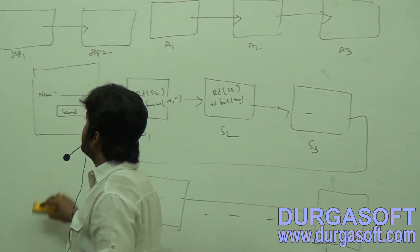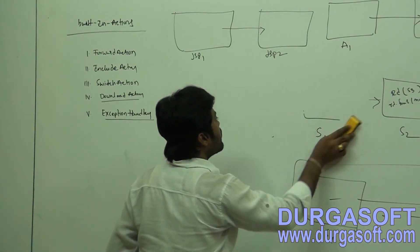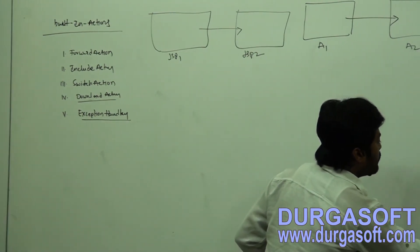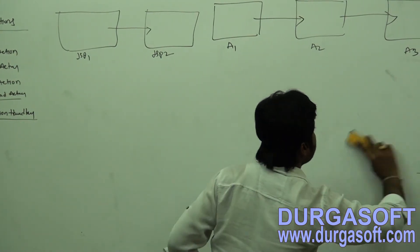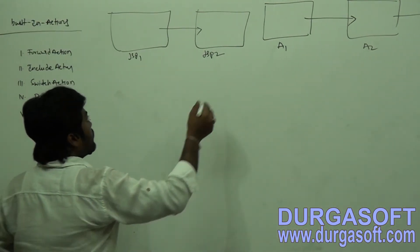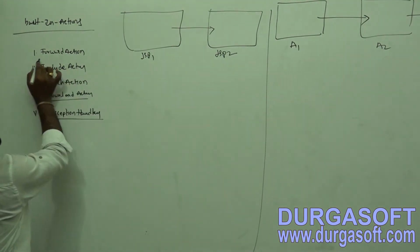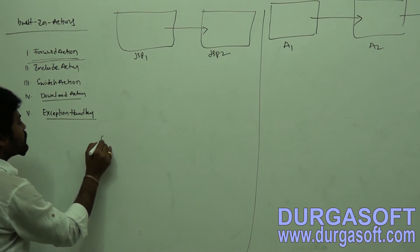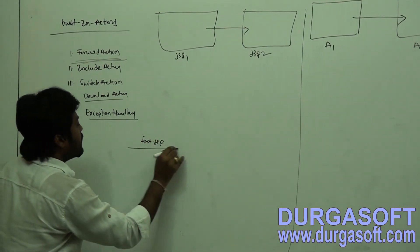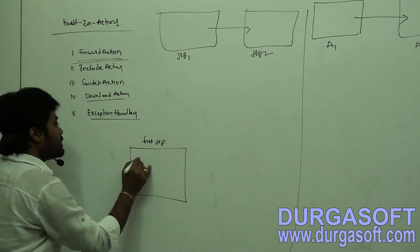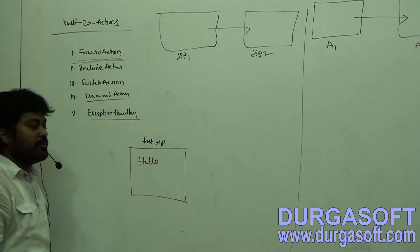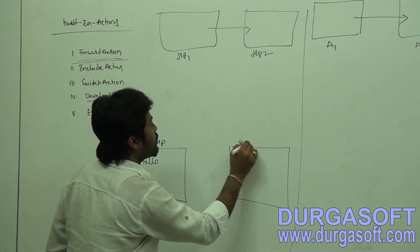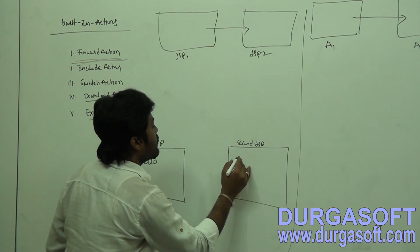For example, if you have first.jsp with content 'Hello', and you want to redirect to second.jsp with content 'Hi' whenever a hyperlink is submitted, your action needs to redirect to the second page.